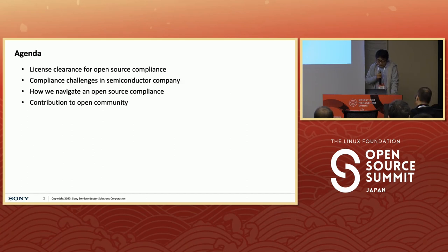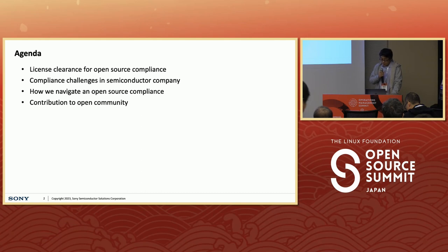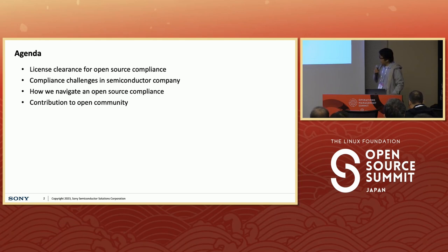Here is the rundown for today's discussion. We have mainly four parts. First, we will discuss common issues in the license clearance workflow. In the next two parts, we will explore the challenges and implemented solutions in our semiconductor company. Lastly, we will showcase our contribution activities.